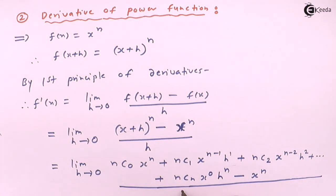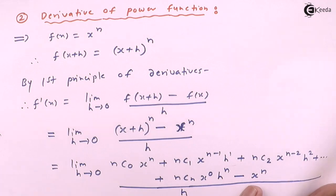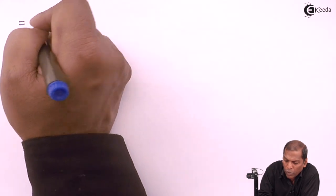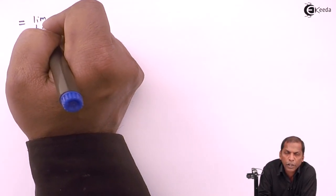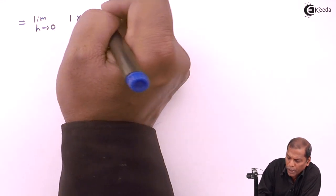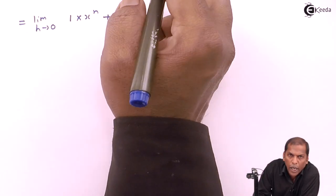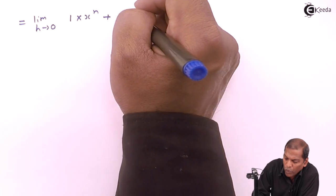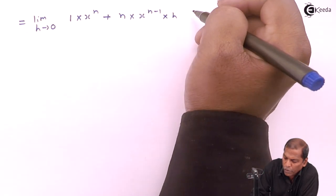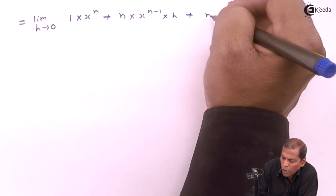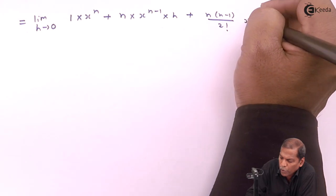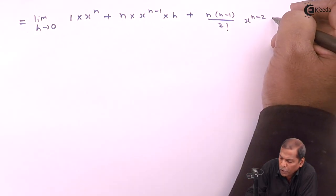The whole thing is divided by h. That equals limit h tends to zero: nC0 gives 1 into xⁿ, plus nC1 gives n·xⁿ⁻¹·h, plus nC2 gives n(n−1)/2! · xⁿ⁻²·h².